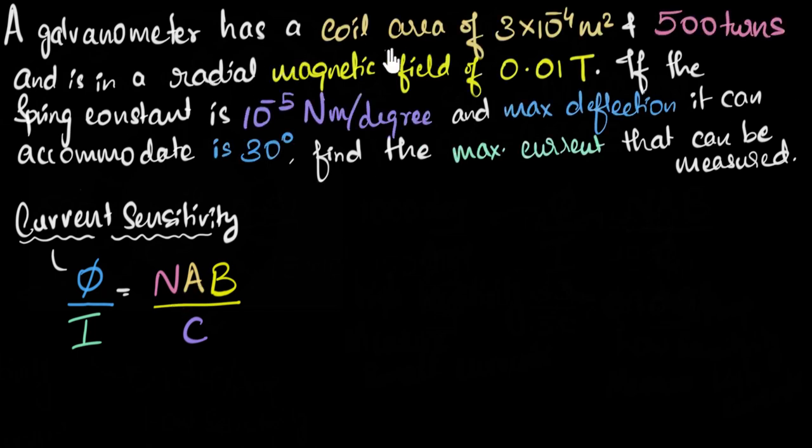So here's my color-coded version. We are given a galvanometer has a coil of area. So its area is given. The number of turns is given to us. Its magnetic field is given. We're also given what the spring constant is. And we are given what the maximum deflection a galvanometer can accommodate. So that's the maximum deflection is given to us. We need to find what the maximum current that can be measured. So what I'll do is I'll first calculate what the current sensitivity is. And let's see what that number tells us. And from that, let's see if we can figure this out.